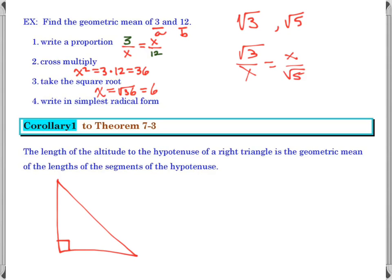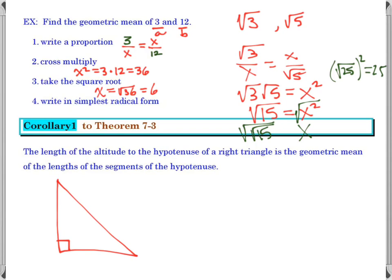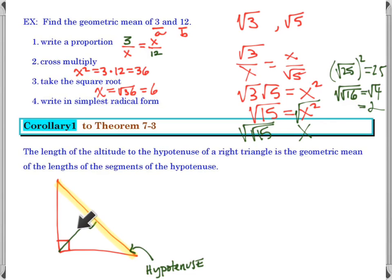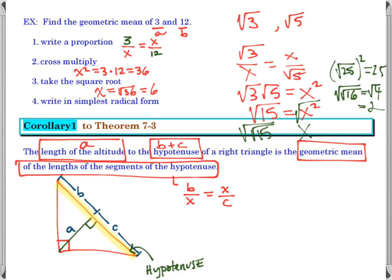Let's draw a picture. There's my hypotenuse and there's my altitude, dividing it into two pieces. We'll call those pieces A, B, and C. The length of the altitude is the geometric mean of the two segments, so we set up the proportion: A over the altitude equals the altitude over B plus C, meaning the altitude equals the square root of BC. This just follows our theorem and our definition of geometric mean — nothing really different.